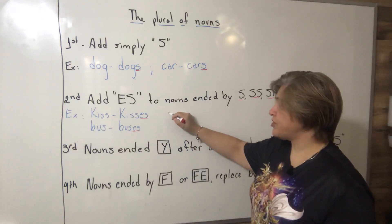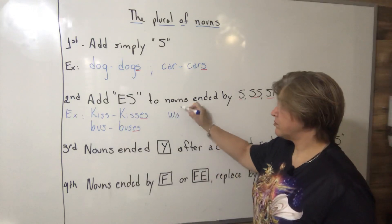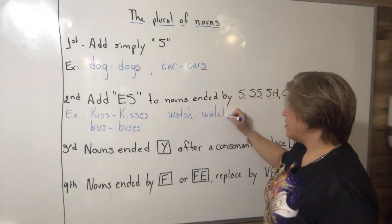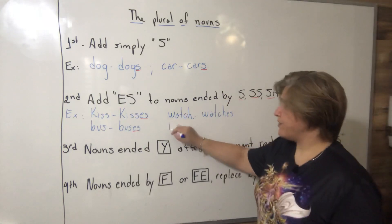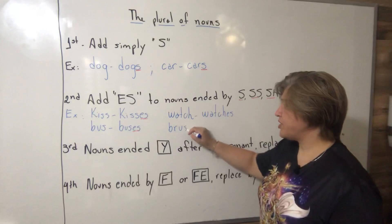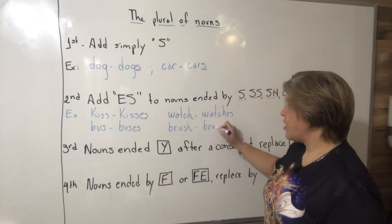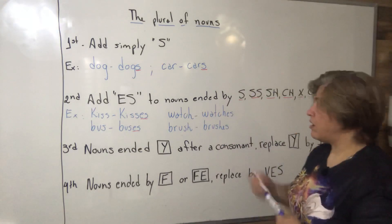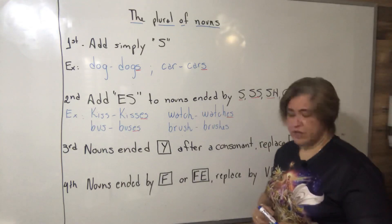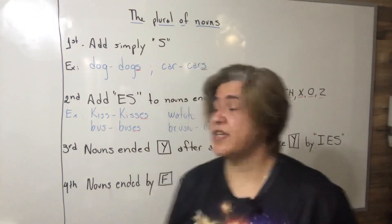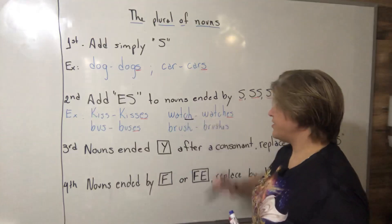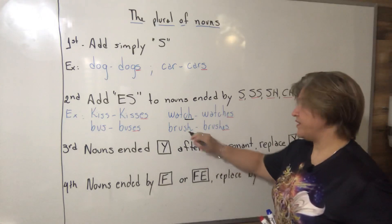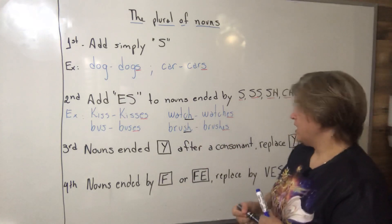We have, for example, watch. We have the word brush, and the plural is brushes. We add ES because the word is finished in CH. We add ES because the word is finished in SH.